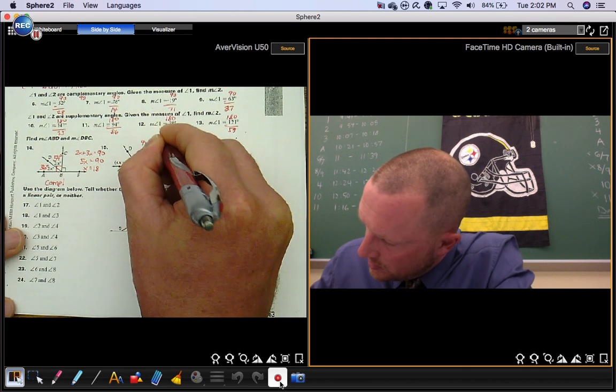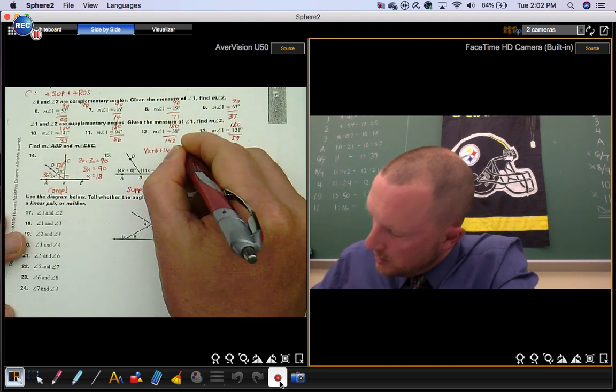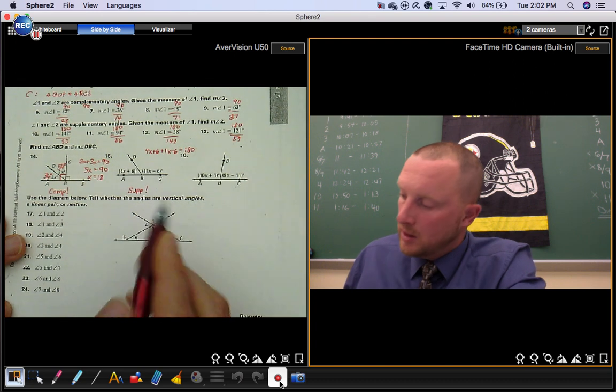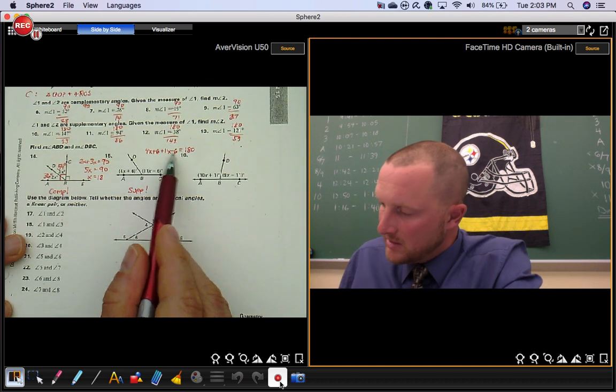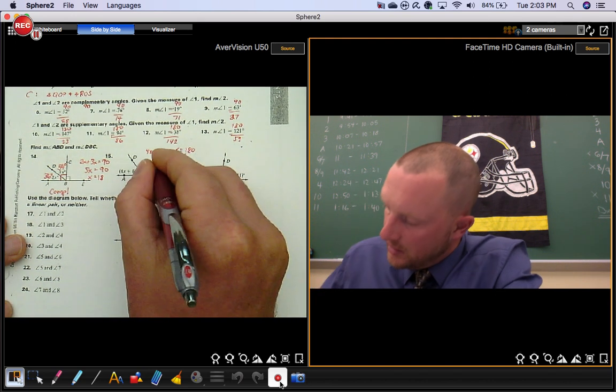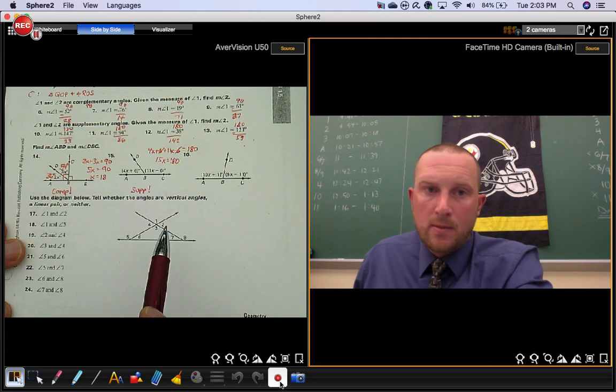4x plus 6 plus 11x minus 6 equals 180. Combine your like terms. The 6's cancel. 4x and 11x give you 15x.